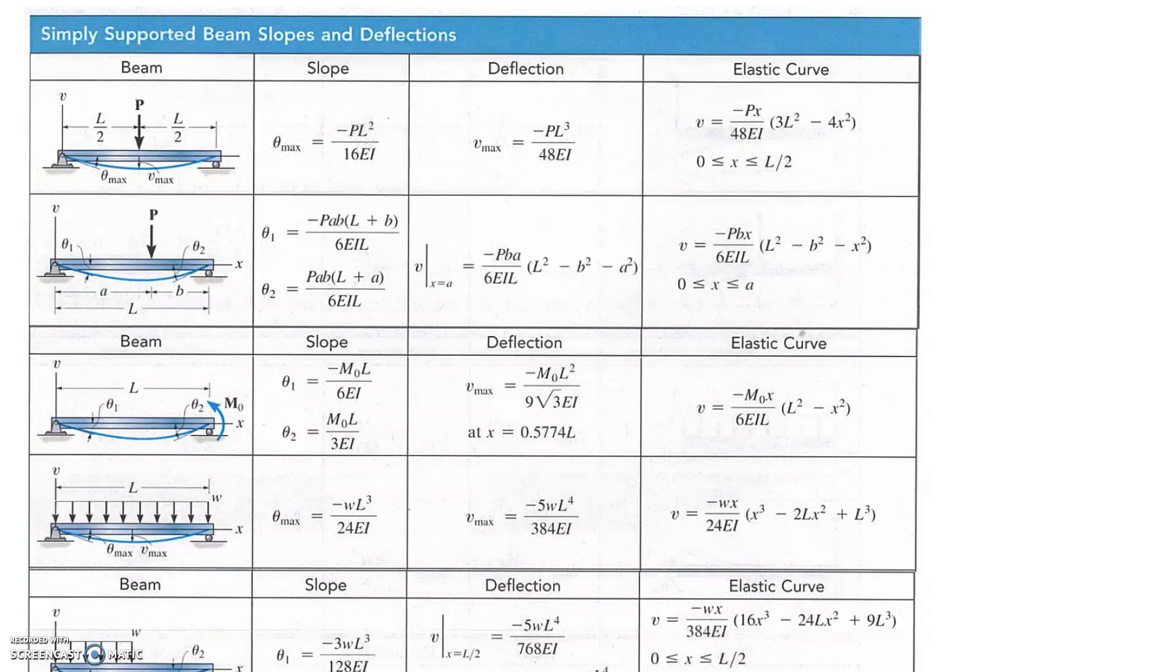Here we've got the maximum angle which occurs at the beginning of the beam. This blue line shows you the deflection curve. And here we've got the maximum deflection, which occurs at the center of the beam. So if you have a simply supported beam, you can just read them straight out of the table without having to perform all the integrals.